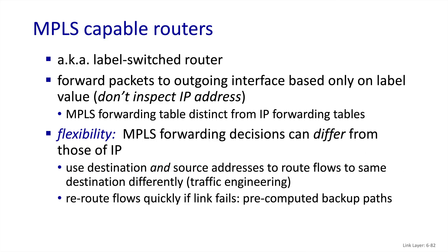The decision of what MPLS label to assign a particular packet can use principles similar to those discussed in generalized forwarding, where it can look at any header field to determine which MPLS path a packet should be placed onto. This allows for flexibility in traffic engineering or even giving priority to different flows. It can also be used to have entire pre-computed backup paths that can be substituted very quickly if the primary path fails.